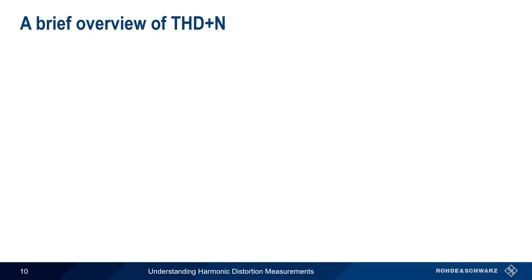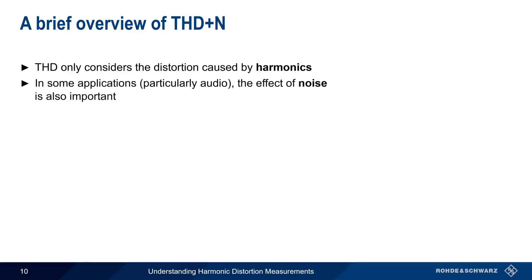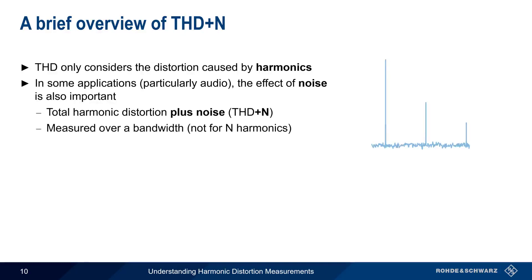Before we conclude this presentation, let's spend a few moments talking about a special variant of total harmonic distortion. Recall that total harmonic distortion only takes into consideration the distortion caused by harmonics. In some applications, particularly in audio applications, the effect of noise is also very important. And in these cases, a measurement of total harmonic distortion plus noise is often desirable. In this case, power is measured over a bandwidth as opposed to only at each discrete harmonic. Like total harmonic distortion, total harmonic distortion plus noise is also reported in percent or in dB.